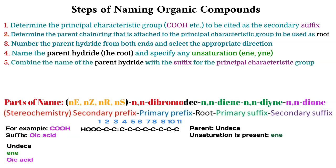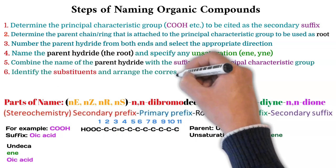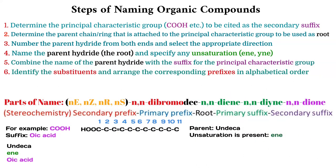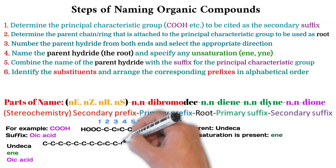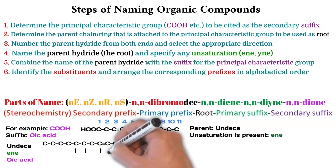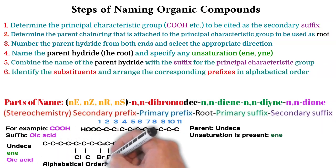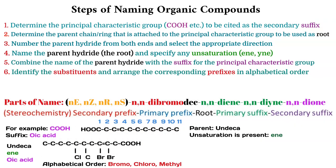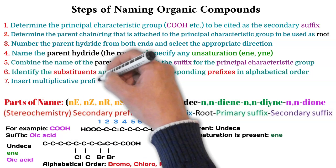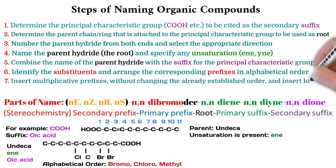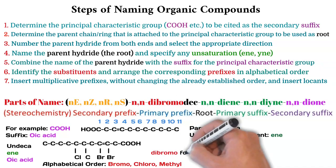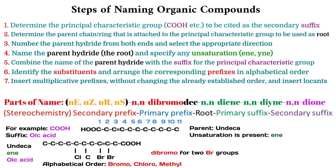Identify the substituents and arrange them in alphabetical order. These names will be considered as secondary prefixes. For example, this structure has bromo, chloro, and methyl groups. Then count the number of each kind of substituent and use corresponding multiplicative prefixes before the names of those substituents. In this example we have two bromines, that's why we will call it 'dibromo'.